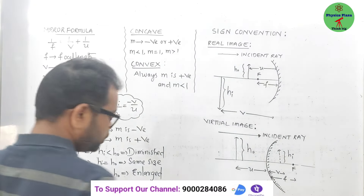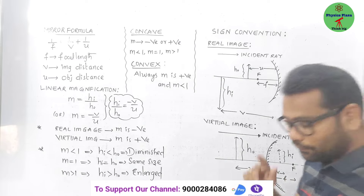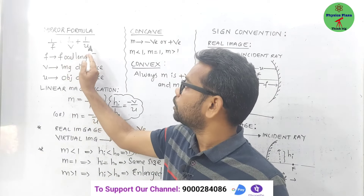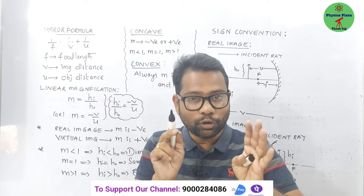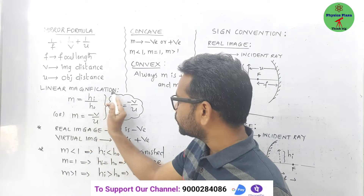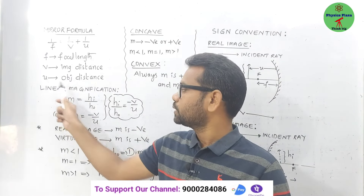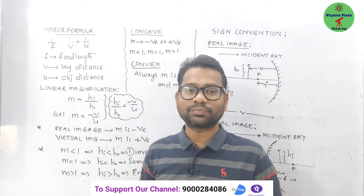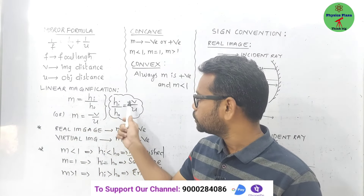Now the mirror formula and linear magnification. The mirror formula gives the relation between focal length, image distance, and object distance: 1/f = 1/v + 1/u. Linear magnification m is defined as the ratio of image height (hᵢ) to object height (h₀), and mathematically m = −v/u. By knowing the sign of m: for a real image, magnification is negative; for a virtual image, magnification is positive.